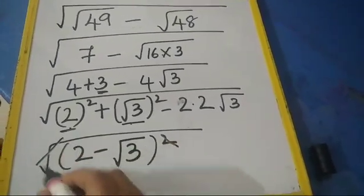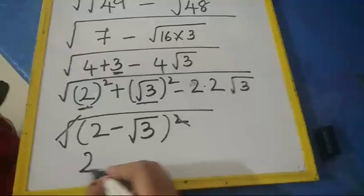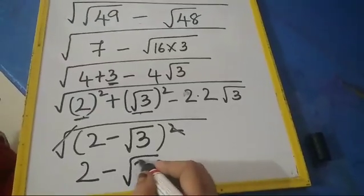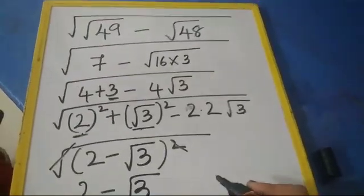square and root get cancelled and your answer will be 2 - √3. I hope you are clear with this.